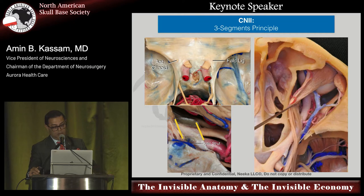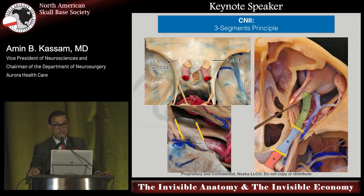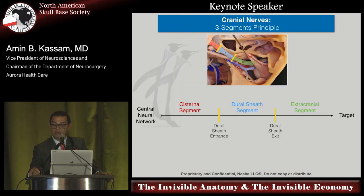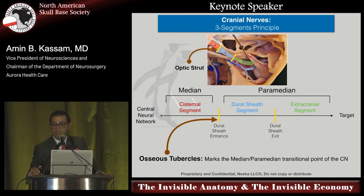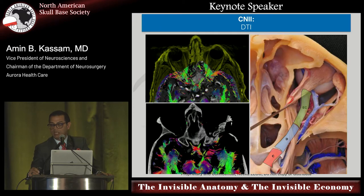Within the axial plane, we were able for the first time to do individual segmentation of the nerve, introducing the concept of a cisternal segment, a dural segment, and an extradural segment for each nerve. We identified a landmark called a tubercle and started to segment the nerve into its components. The cisternal segment became medial to the tubercle — and it turns out that was medial to the carotid in every case. The extradural and dural segment, lateral to the tubercle, became lateral to the carotid.